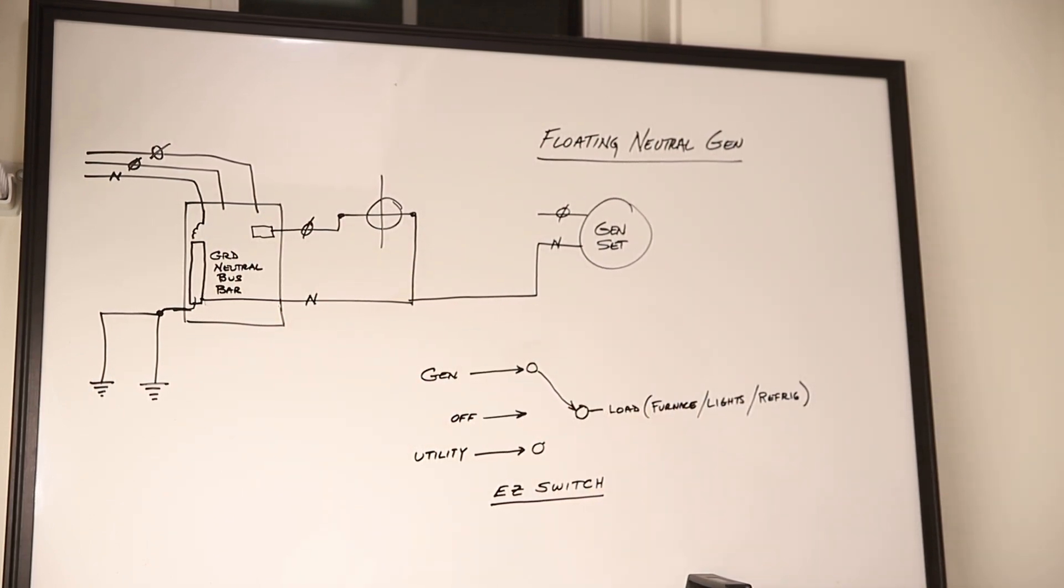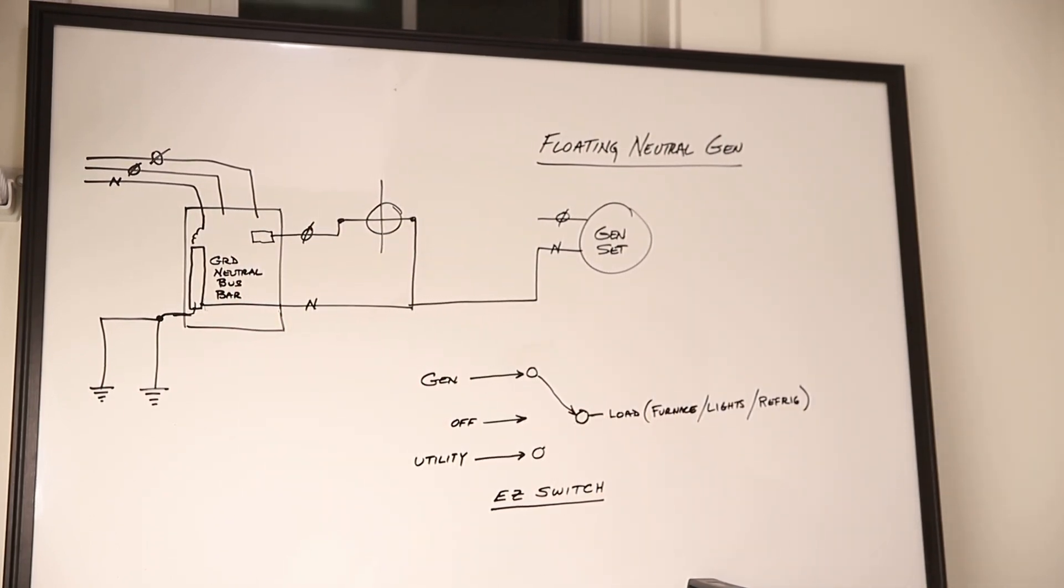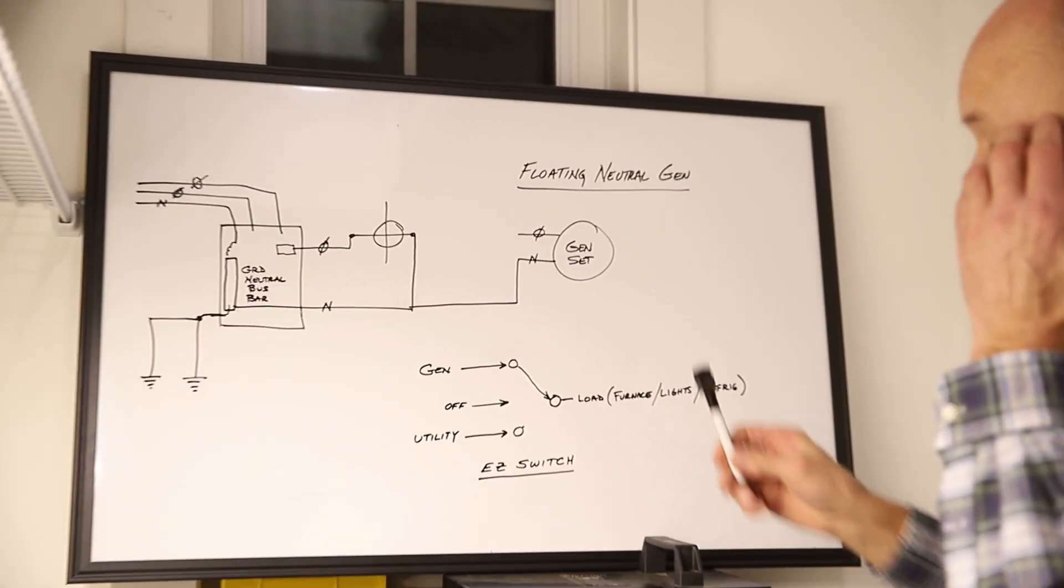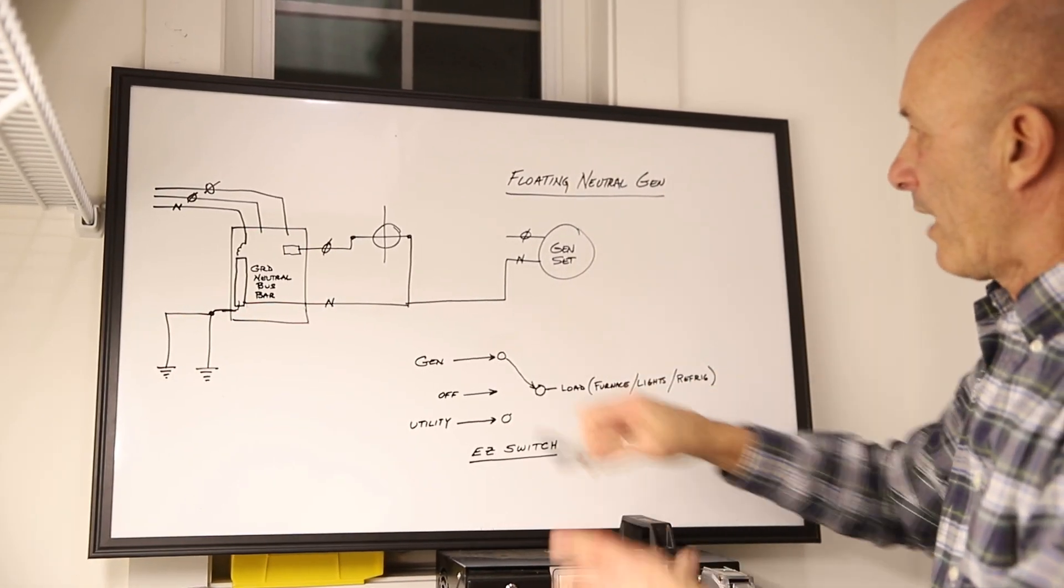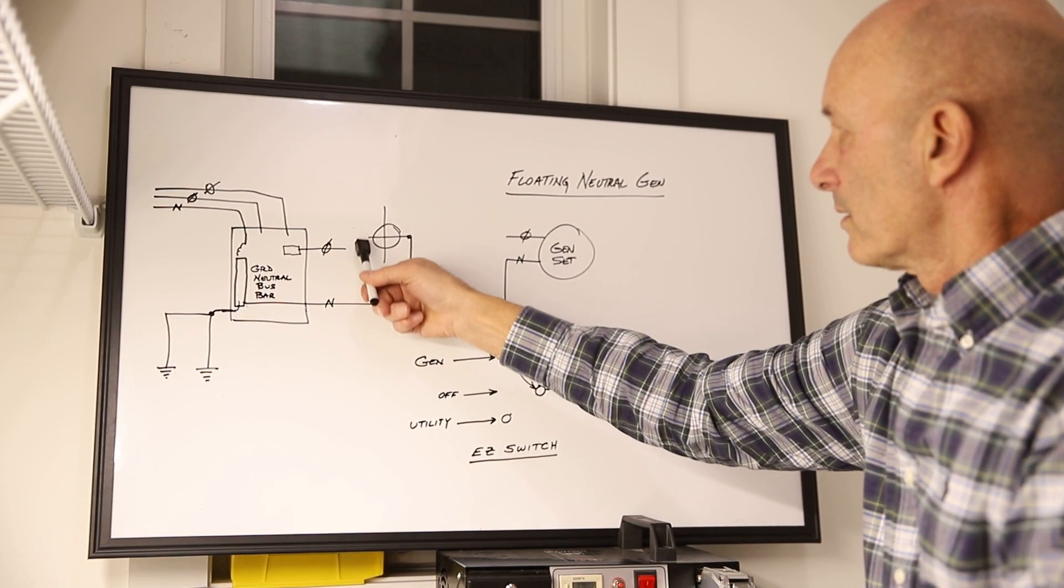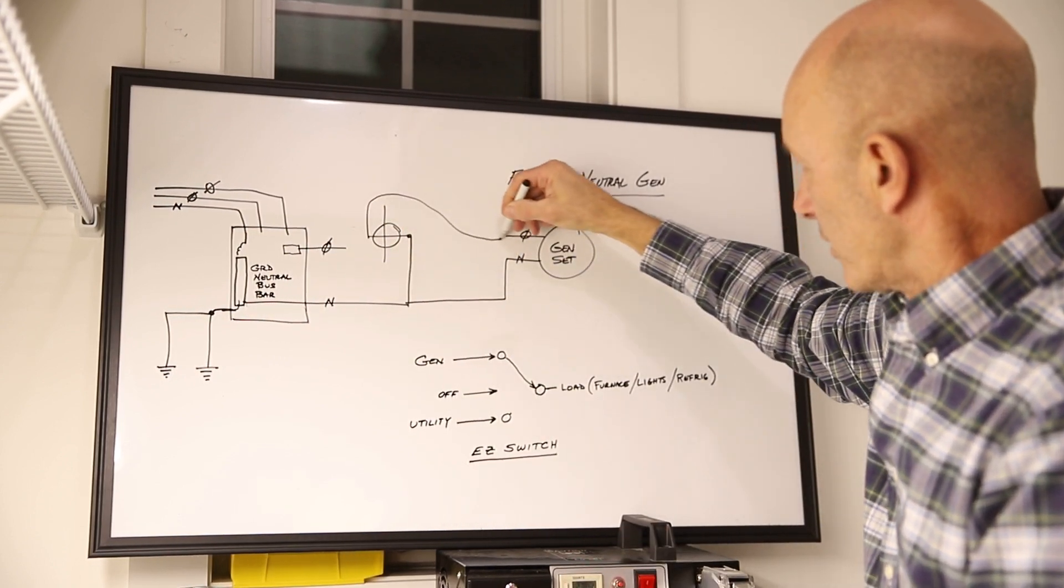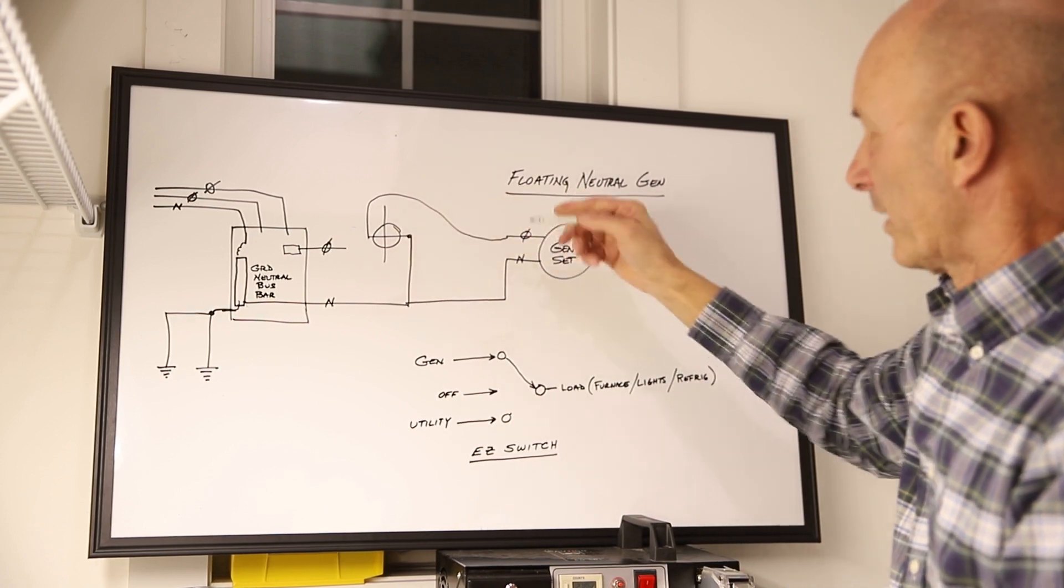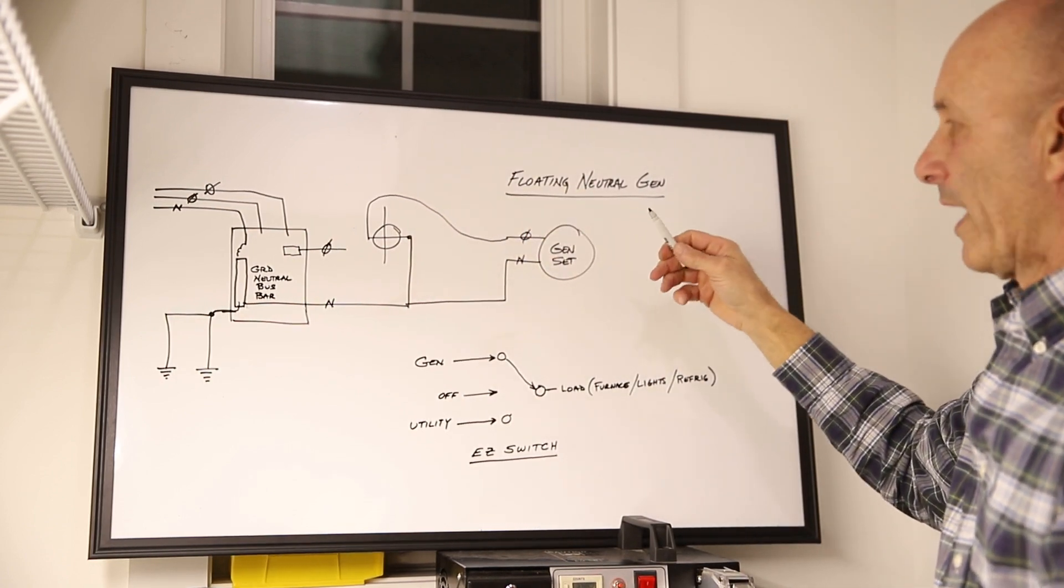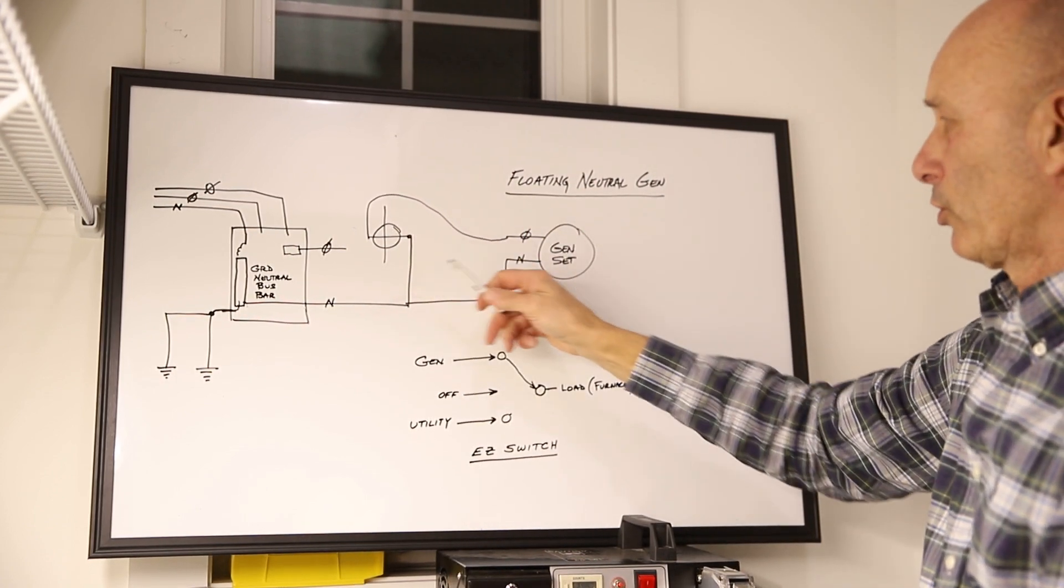Well the simple reason is because electricity as water takes the path of least resistance. So your generator is putting out power, let's disconnect it, let's draw it like it's putting out power, and it's energizing this load. Again, it could be a furnace, lights, a refrigerator, whatever circuit you hooked up.